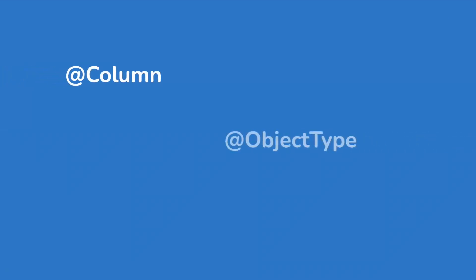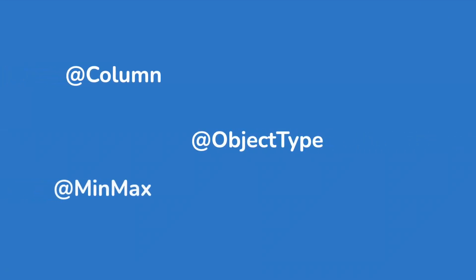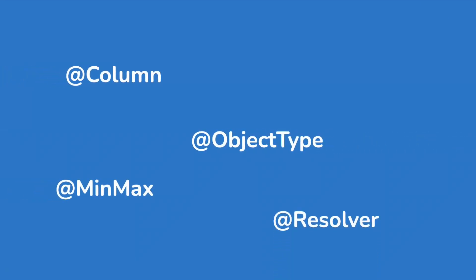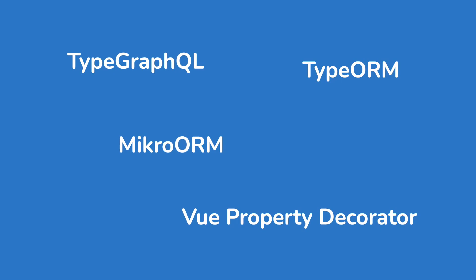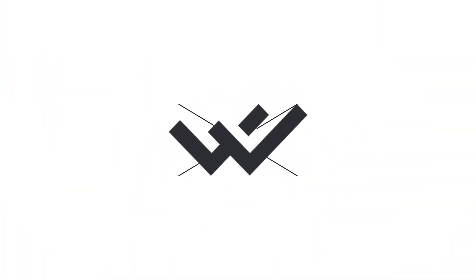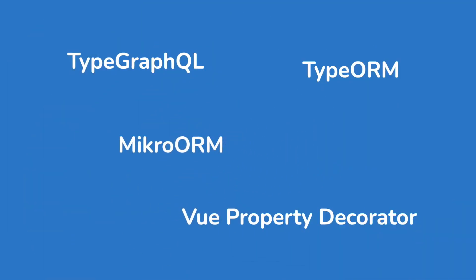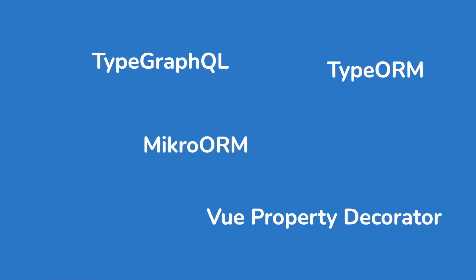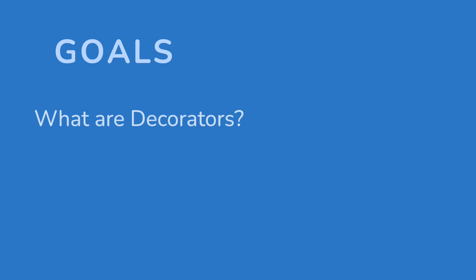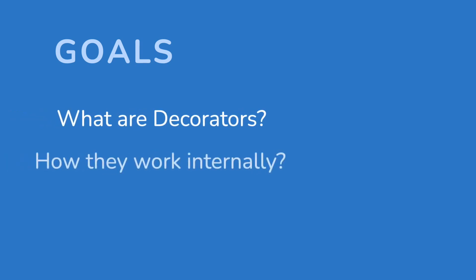I've been dealing with decorators quite a bit lately and I've been wondering how these things even work. You can find decorators in many dependencies like TypeORM, type-graphql, or vue-property-decorator. These decorators allow us to write more elegant code. By the end of this video, you will know exactly what decorators are in TypeScript and how they work internally.